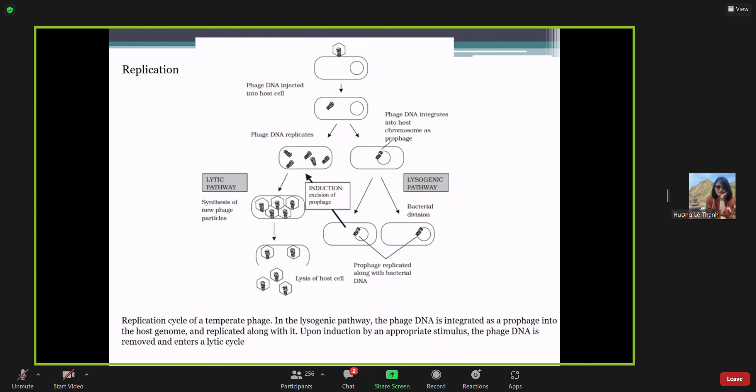There are two pathways - we have a lytic pathway and lysogenic pathway. In the lytic pathway, the virus can infect the host cells and they will replicate. They use the host cells material to replicate their DNAs and proteins. Then they can assemble new particles, synthesize new virus particles inside the host cells. In the final step, they will lyse the host cells and release numbers of new viruses.